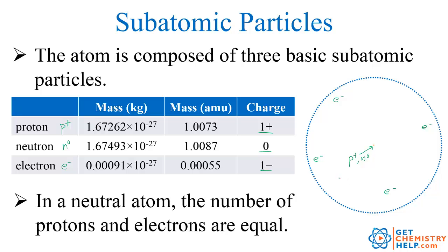In a neutral atom the number of protons, which are positive, must equal the number of electrons, which are negative. If they were not equal and you had more protons than electrons it would be positively charged, or if you had more electrons than protons it would have a negative charge. We'll see in a later video there are things called ions that can have charges, but in neutral atoms the number of electrons always equals the number of protons.